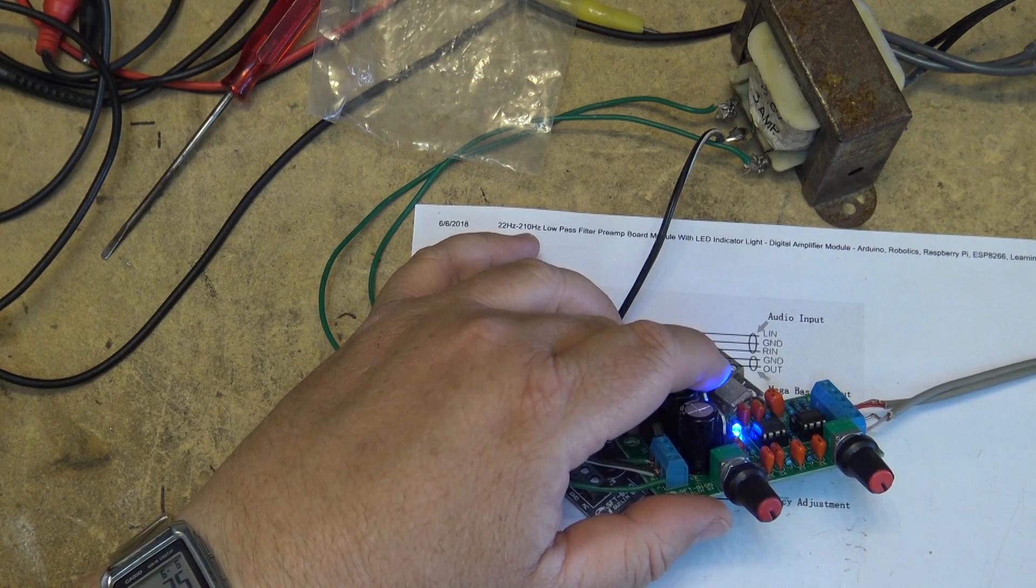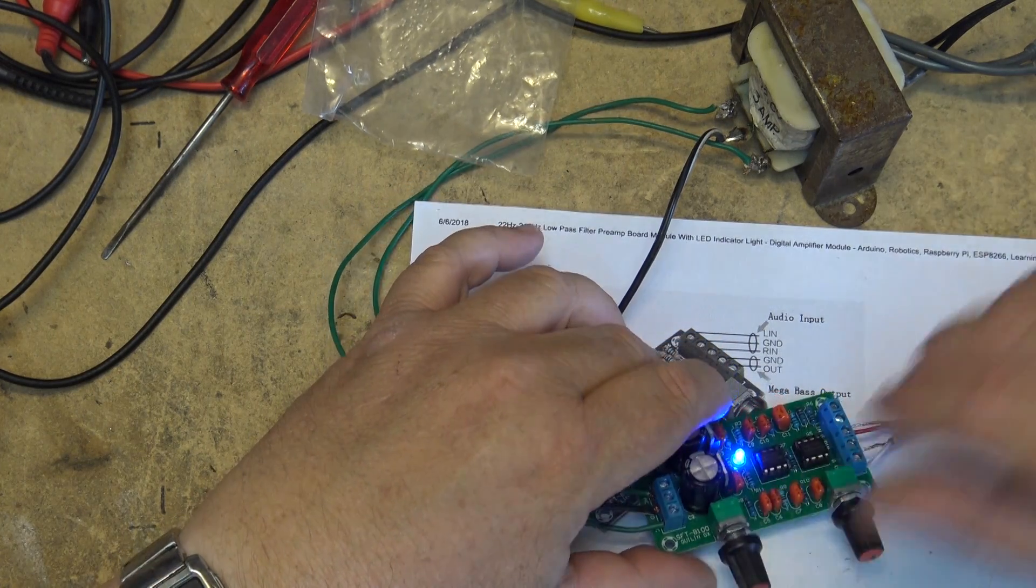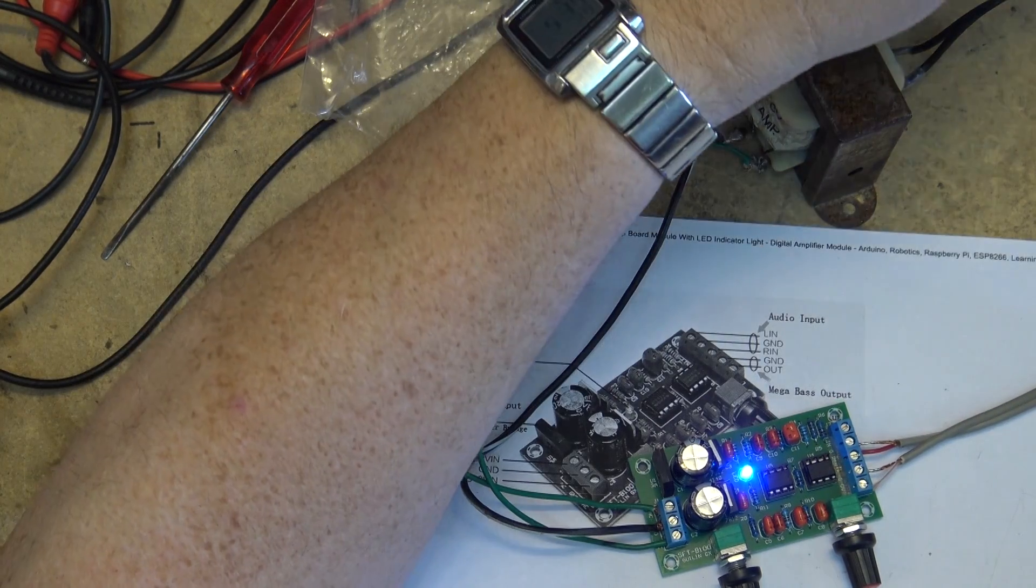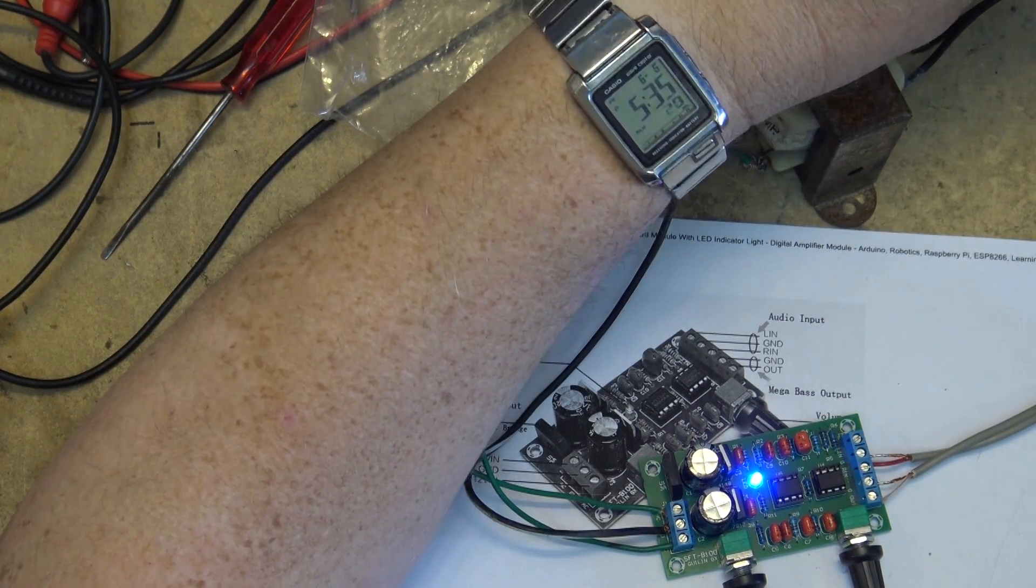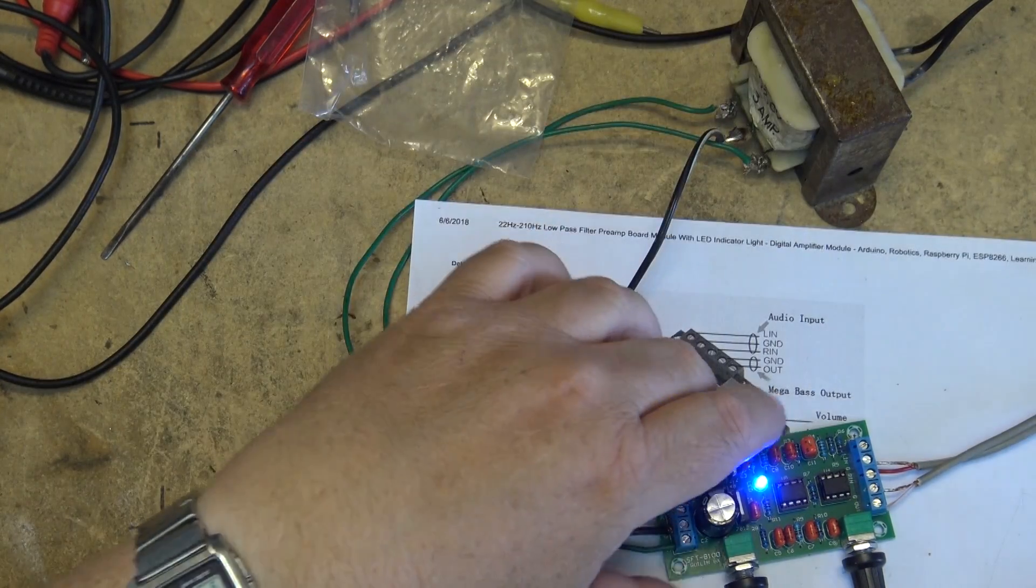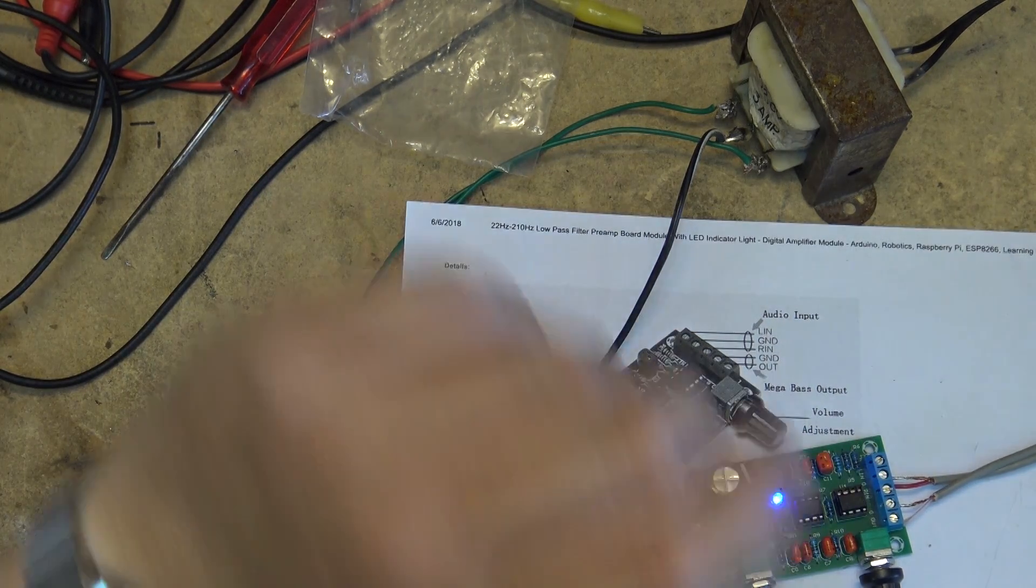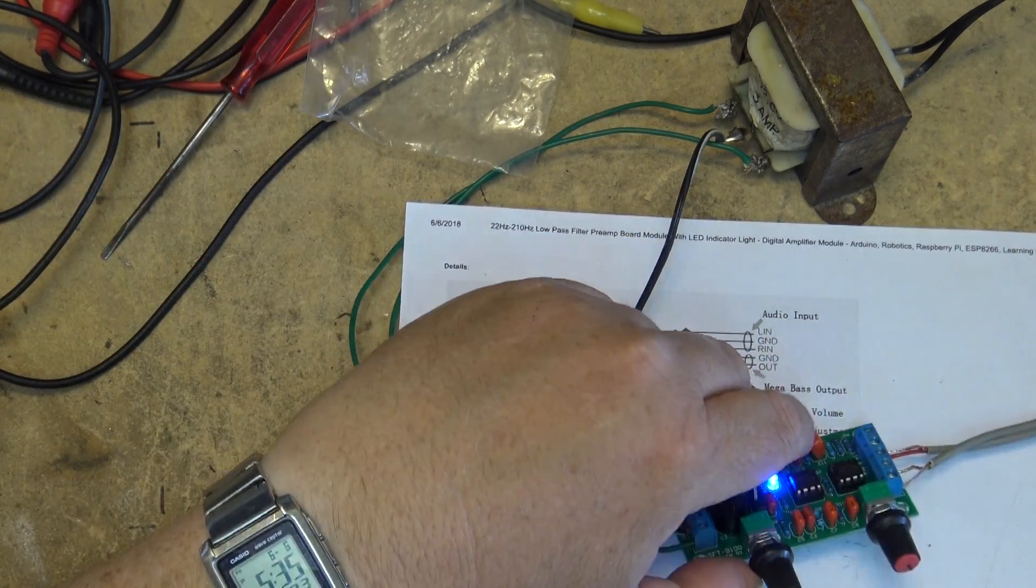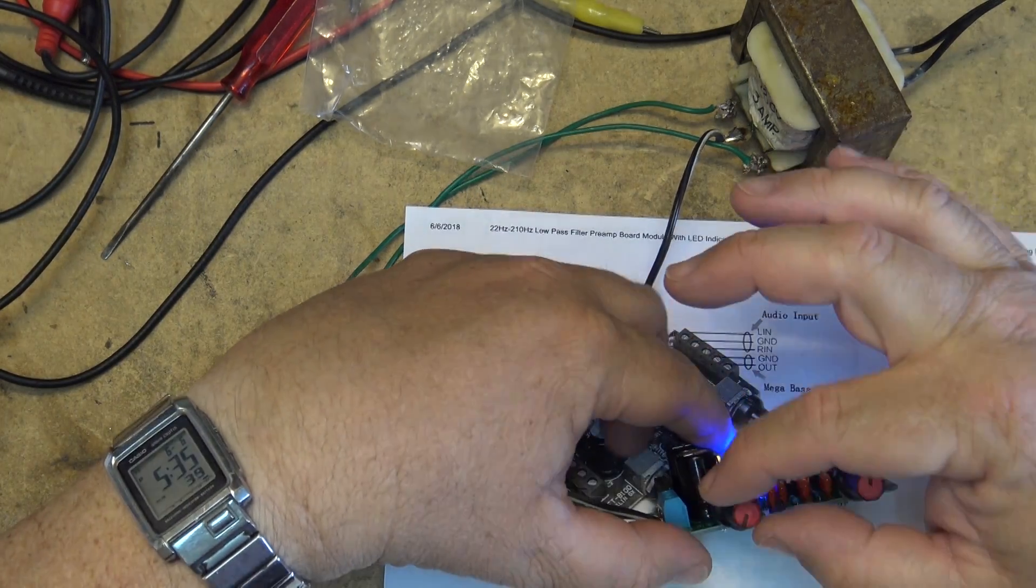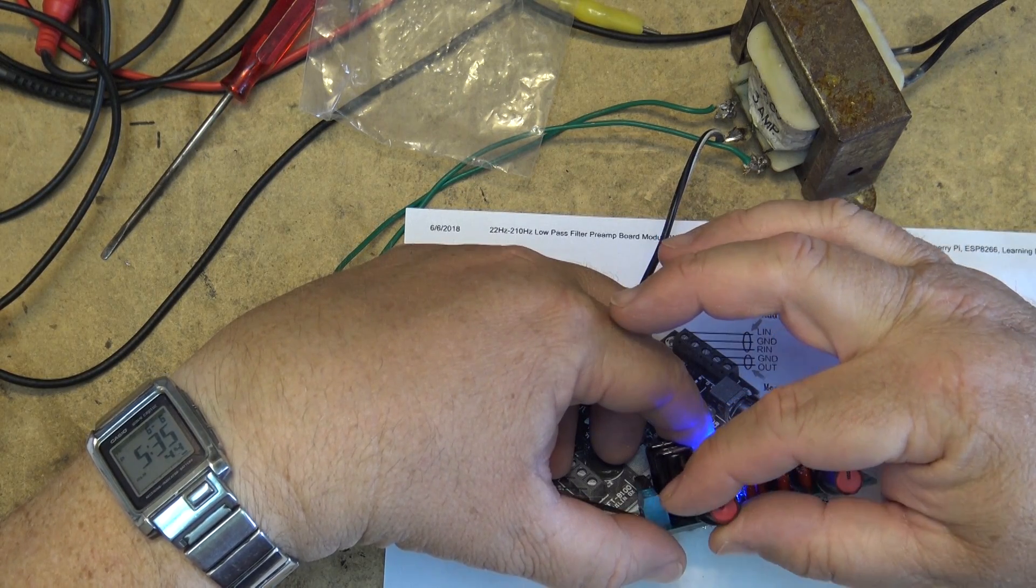Got to find something with lots of bass in it. There's our cutoff frequency, and if I turn this clockwise, it'll lower the cutoff.